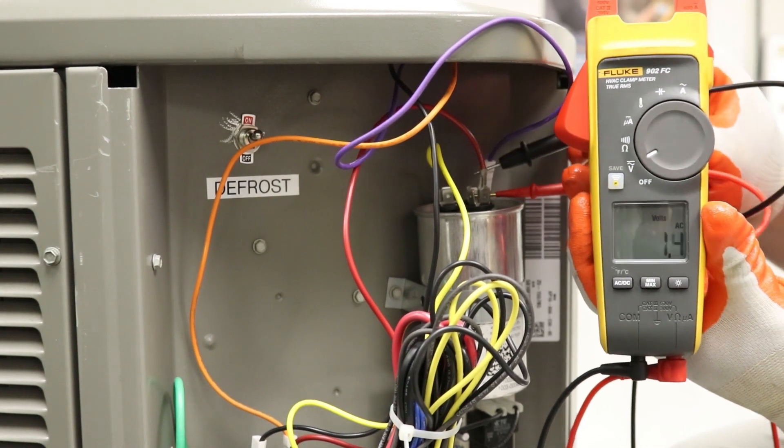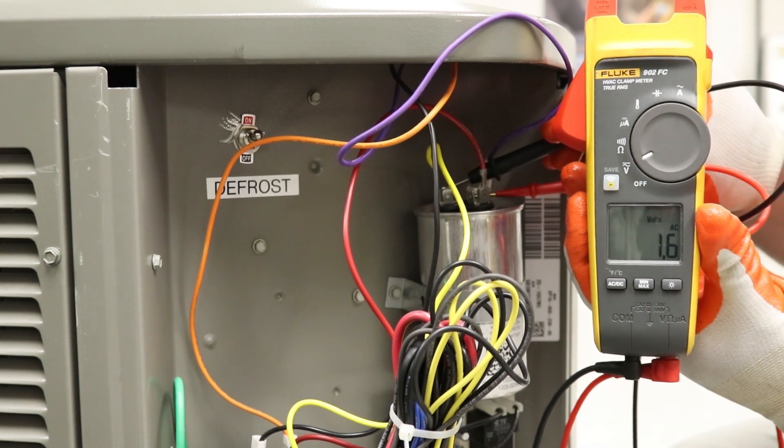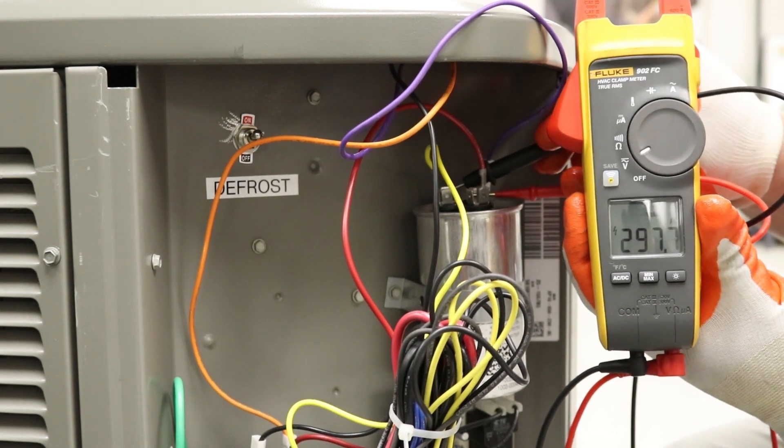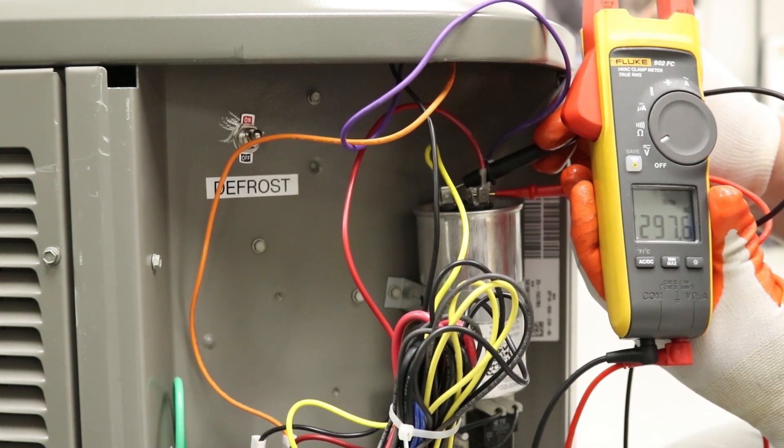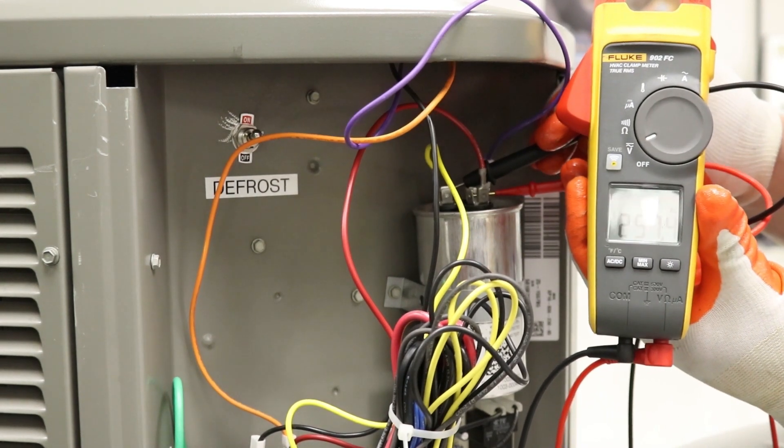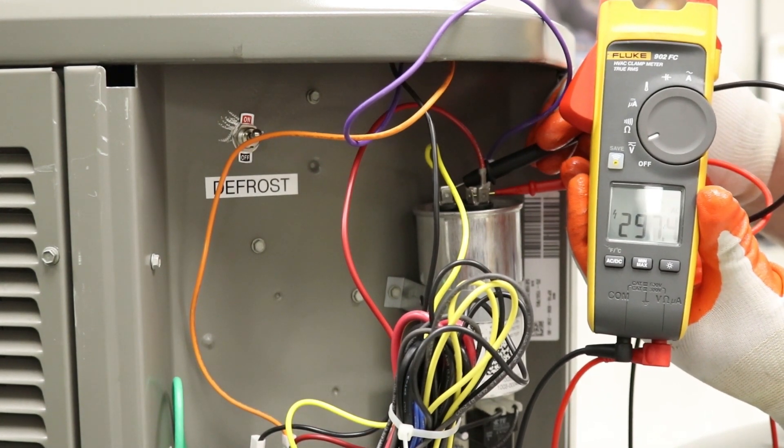And lastly, we need the number from the compressor. Same thing. We're going to go across the common terminal to the hermetic terminal. And that is going to give us 297.6 volts.